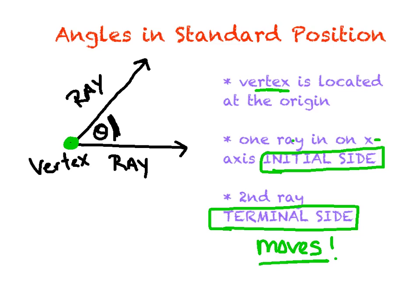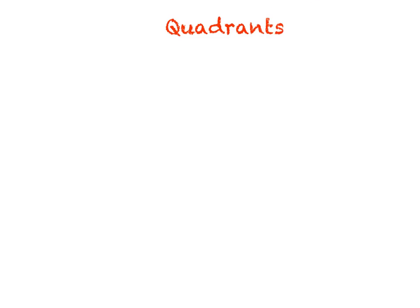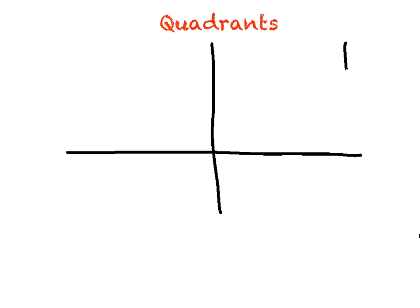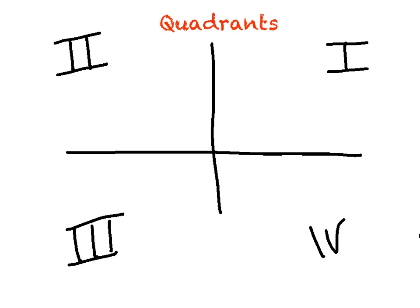Before we start drawing any of these, let's talk about our quadrants. Hopefully you know by now that there are four quadrants. Let's draw an x- and y-axis and label them. We start in the upper corner — this represents quadrant one. Then they go counterclockwise, so against the clock: two follows this way, three down here, and four over here. We have four quadrants.